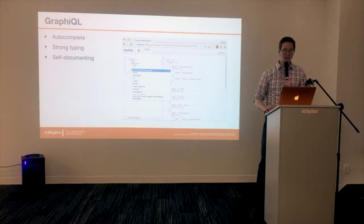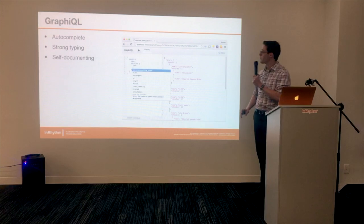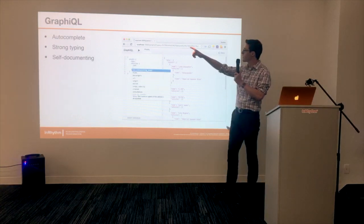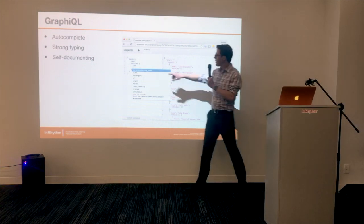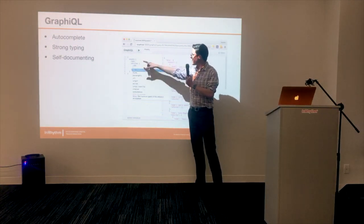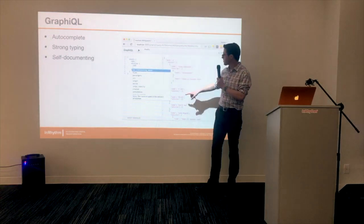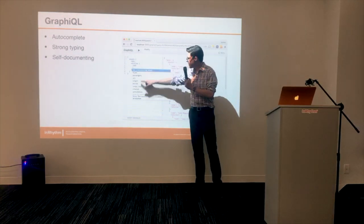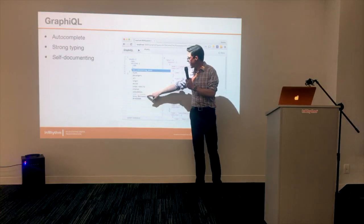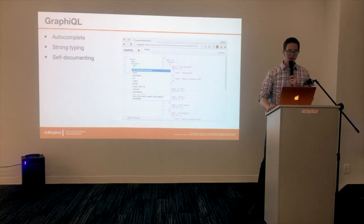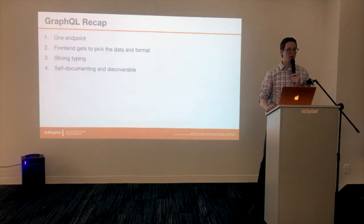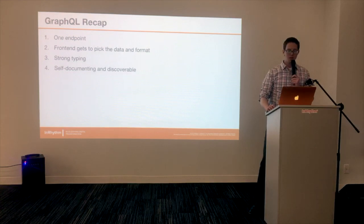There are also interesting technologies coming out with GraphQL. Facebook made something called GraphiQL — notice the little 'i' there. It demonstrates some of the great advantages of GraphQL. You build up a query, hit play, and see the results. It has great features like type-ahead, the type of the field, and documentation. So that means GraphQL has auto-complete, strong typing, and it's self-documenting. Quick recap: one endpoint, front end gets to pick the data and the format, it's strongly typed, and it's self-documenting and discoverable.